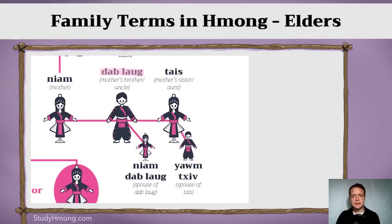Now let's look at your mother's side. On your mother's side, the rules are slightly different. Whether she has an older brother or a younger brother, it's irrelevant — you would use the same term for your uncle, the brother of your mother, and that would be Dao. And your mother's brother's wife would be Niya Dao.